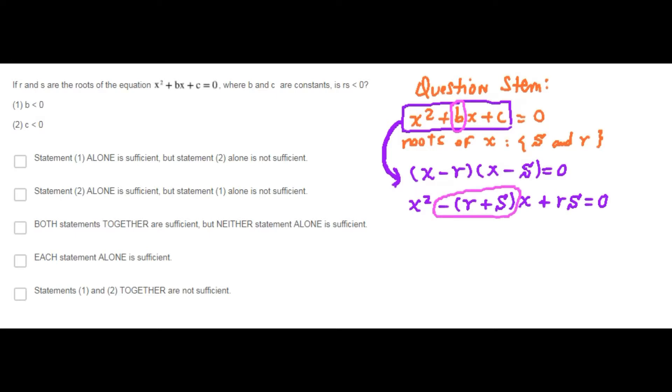And c is equal to the product R times S. We want to know whether the product R times S is less than 0 or not. In other words, we want to know what's the sign of c.